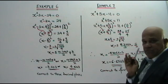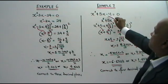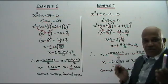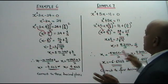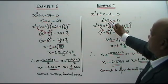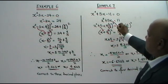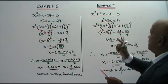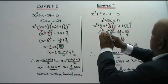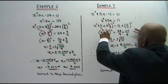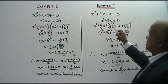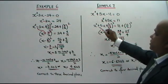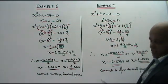Step number 1: negative 11, bring to the other side, you get positive 11. Then you take the coefficient of x, divide it by 2, square it, and add to both sides of the equation like this.